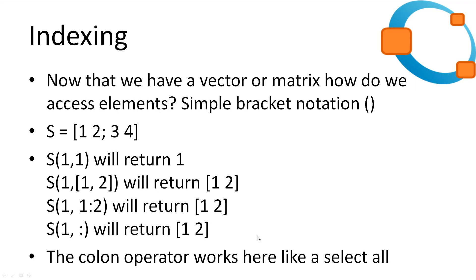Now that we know how to create vectors and matrices, how do we access the elements? We can use round brackets. Imagine we have a matrix 1, 2, 3, 4. We can access the first element by specifying its location in x and y coordinates — s(1,1) gets us the first element in the first row. It's worth mentioning that vectors in Octave start at 1 rather than 0. We could also access the first whole row as a vector by specifying s(1, [1 2]), meaning row 1 and columns 1 and 2, which returns the vector 1, 2. The colon operator can also substitute for 'all'.